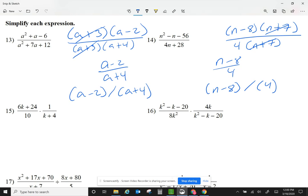Let's take a look at question number 15. The top, let me factor a 6. So I get k plus 4 over 10 times 1 over k plus 4. Cancel the k plus 4.